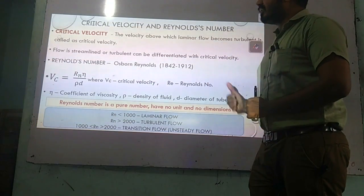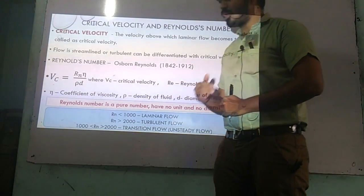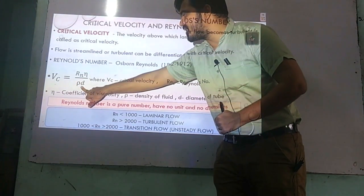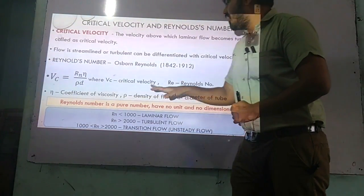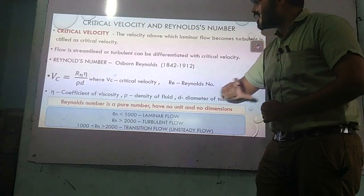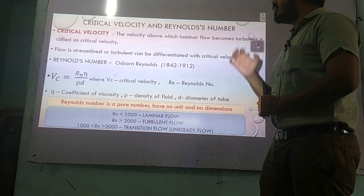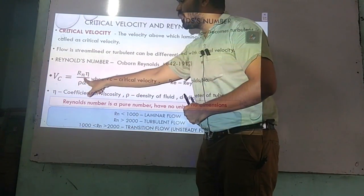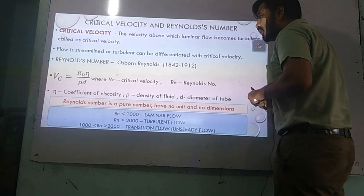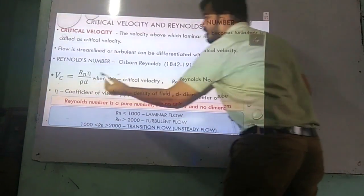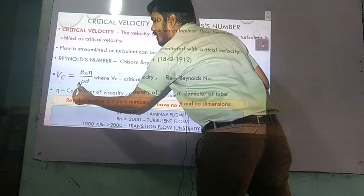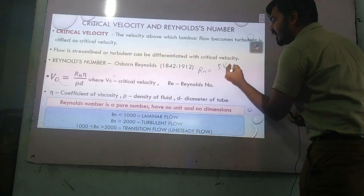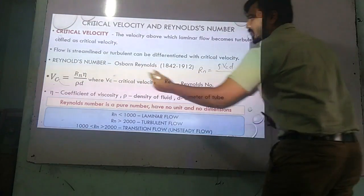Reynolds number is used to predict whether flow is laminar or turbulent. The formula is: Rn equals rho times critical velocity times d, divided by eta. Reynolds number is a pure number — it has no unit and no dimension. According to our board exam standard, if Reynolds number is less than 1000, the flow is laminar. If greater than 2000, it is turbulent. If it lies between 1000 and 2000, it is at an intermediate state called transition flow.